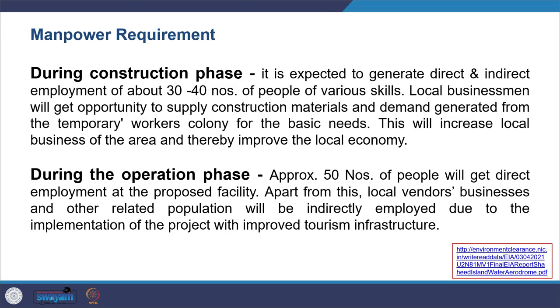Manpower requirements have been estimated at direct and indirect employment of about 30 to 40 people of various skills. The report also highlights that local businesses will get opportunities to supply construction materials, and demand generated from temporary workers will increase local business. Reflecting on what we studied in social impact assessment — such as in the London Bridge case — consider what kind of oppositions and concerns were raised and whether this assessment addresses those kinds of aspects.